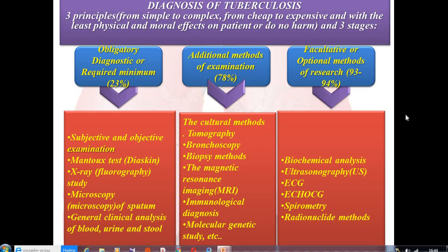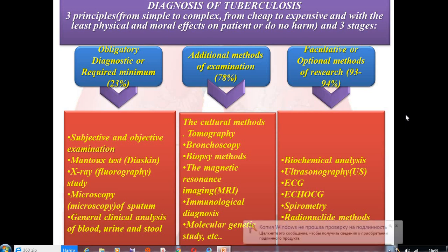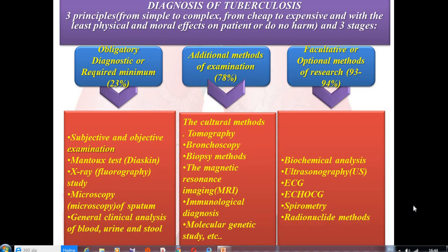Now our next topic is the methods of examination of tuberculosis. You should know about three principles and three stages of how we make a diagnosis. The three principles are: start from simple methods of examination to complex, start from cheap methods to expensive, and of course the main principle of medicine — the least physical and moral effects on patients, or 'do no harm.'